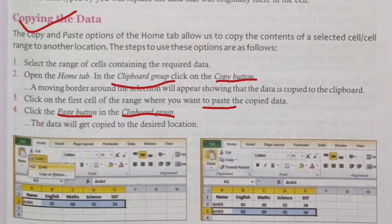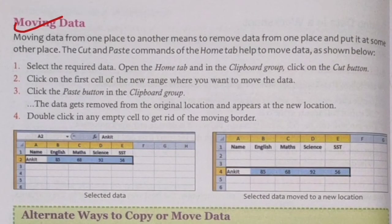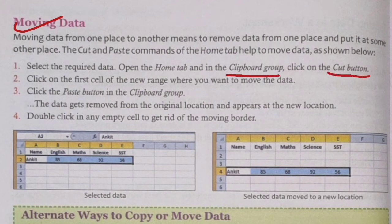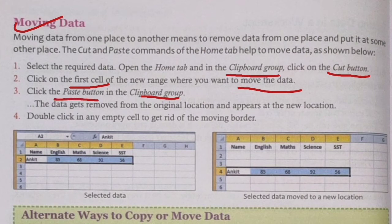Moving data means using cut and paste. Select the required data, open the Home tab, and in the Clipboard group click the Cut button. Click on the first cell of the new range where you want to move the data, then click the Paste button in the Clipboard group. The data gets removed from the original location and appears at the new location. Double-click in an empty cell to get rid of the moving border.